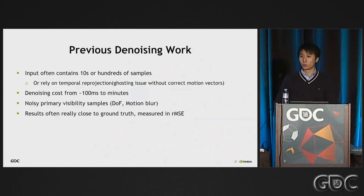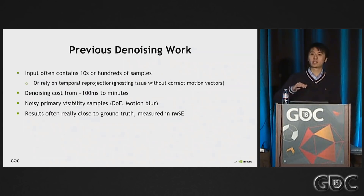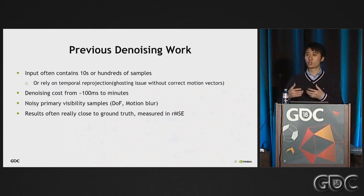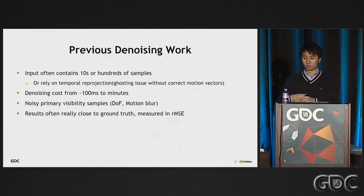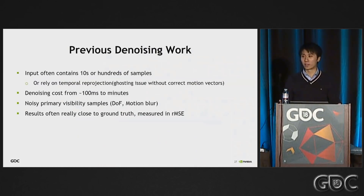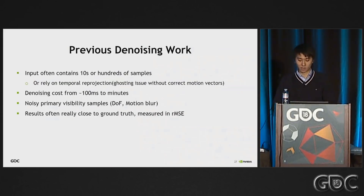Other work like SVGF only uses one sample per pixel. However, it depends heavily on reprojecting history information back to the current frame. That works okay when you have correct motion vectors, but for a lot of circumstances you just don't have all the correct motion vectors. For example, we don't yet know how to efficiently compute the motion vector for soft shadows cast by an area light source on moving geometry. So when you don't have the motion vectors, your filtered result will just end up with a lot of ghosting, and that's not acceptable to us.